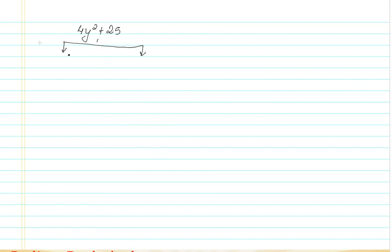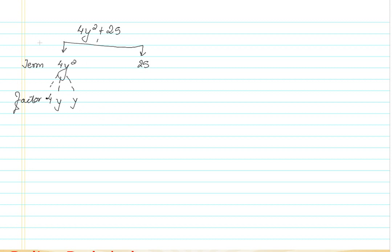Here, the term is 4y squared, and the factors are 4, y, and y. So 4 is the numeric constant and y is a variable.